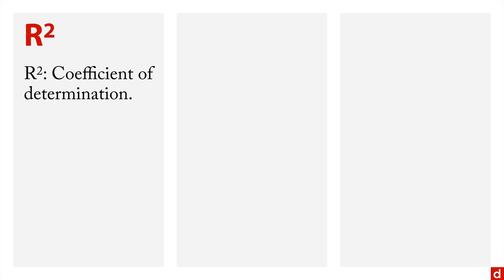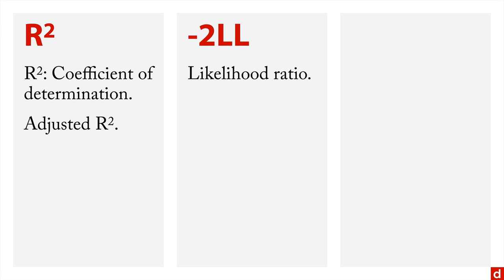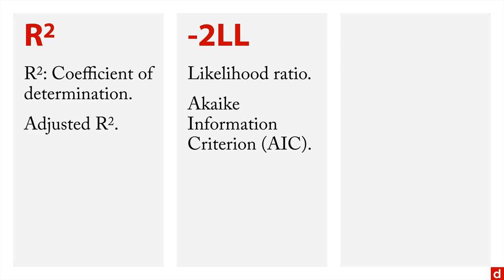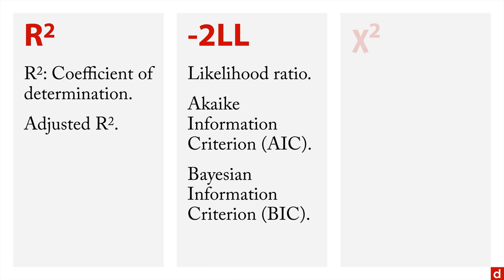There are a few really common approaches to this. The first one is called R-squared — its longer name is the coefficient of determination. There's a variation called adjusted R-squared which takes into consideration the number of variables. Then there's minus-2 log likelihood, which is based on the likelihood ratio, and a couple of variations: the Akaike information criterion or AIC, and the Bayesian information criterion or BIC. And then there's also chi-squared — that's actually a lowercase Greek C that looks like an X.